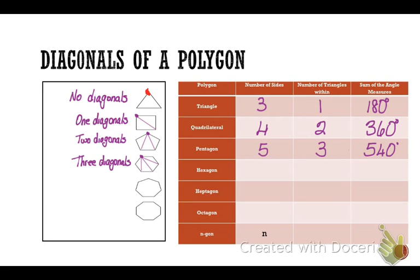I'm going to do the same thing with that hexagon. I was able to draw three diagonals from one vertex, which cut the shape into four triangles, and that gives me 720 degrees.